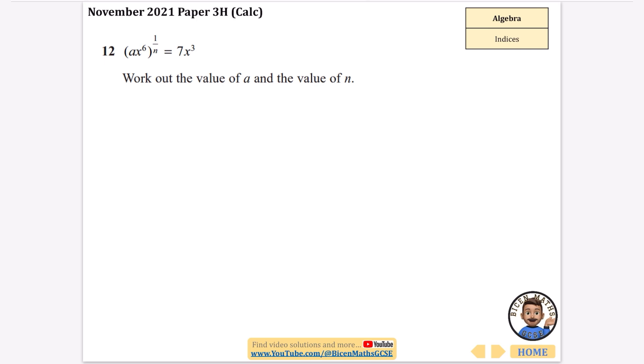Okay, this one is definitely harder. It's question 12, so it's further along in the paper that we've got. They've told us that ax to the 6 to the power of 1 over n is equal to 7x cubed that we've got here. Now, 1 over n means that we can apply this 1 over n to this part and this part. So that means that a to the 1 over n, and then we get x to the power of 6 times 1 over n is 6 over n, and that is equal to 7x cubed.